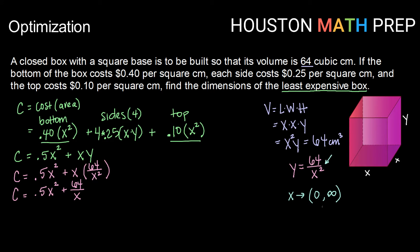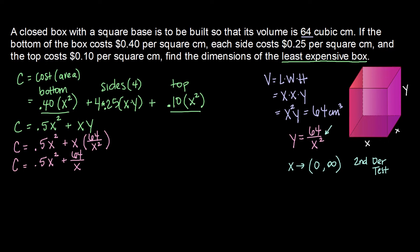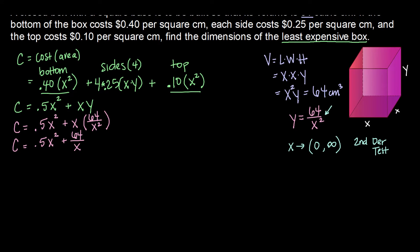So when we work on an open interval, we're going to use the second derivative test to find our absolute minimum. Alright, so for the second derivative test, we need to find our critical points of the first derivative that have our derivative equal to 0. So let's start with finding our first derivative. C prime will be 2 times 0.5 is 1x, plus if we think of this as 64x to the negative 1, then we'll have negative 64x to the negative 2.